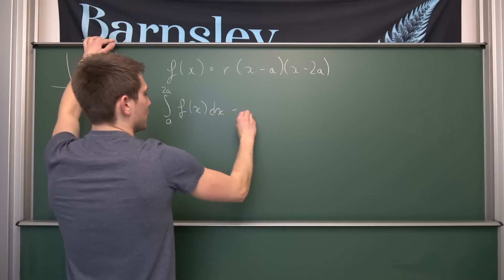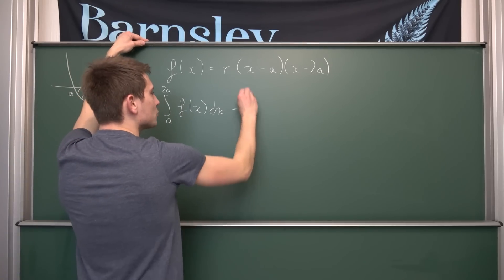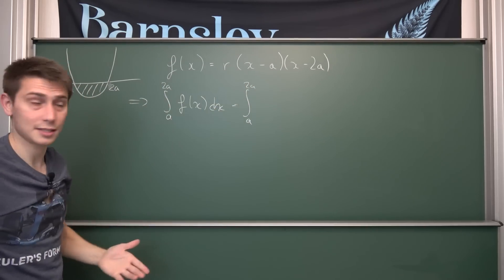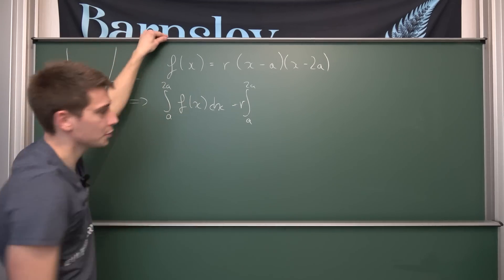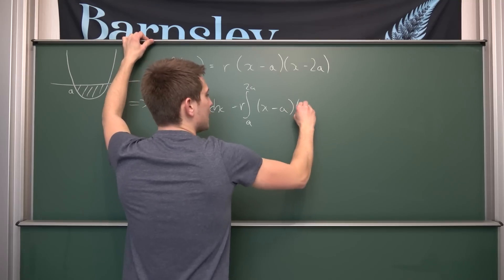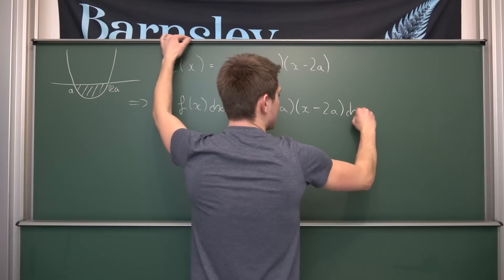Now we can plug everything in. This is going to be the integral from a to 2a of r times our expression. r is a constant, just a scaling factor. We can bring it to the front using linearity of the integral. And then x minus a times x minus 2a, integrate with respect to x.